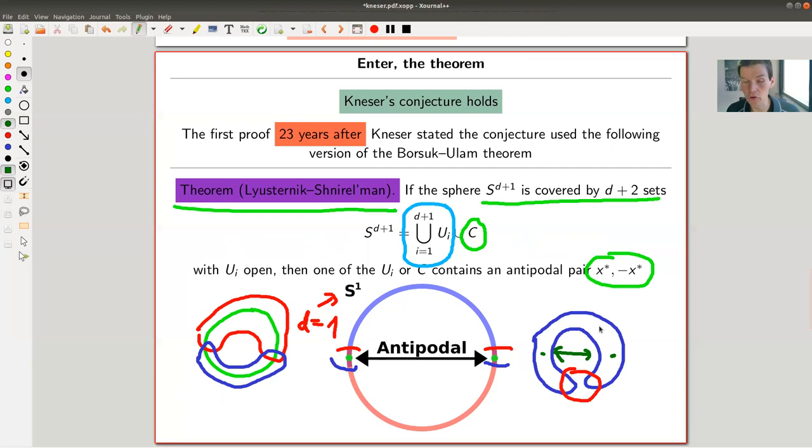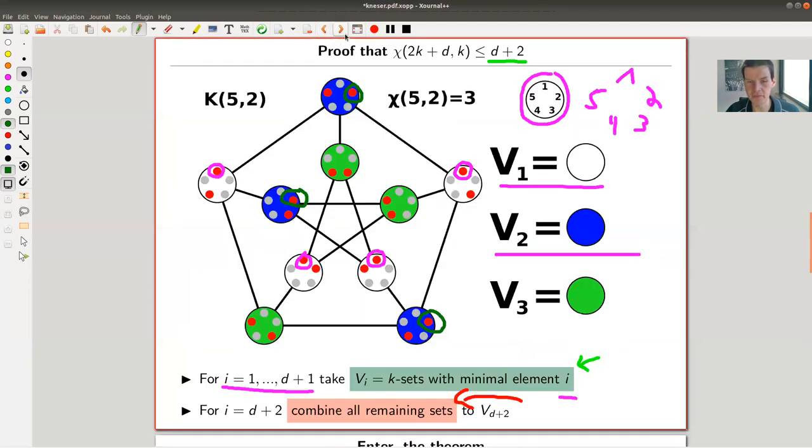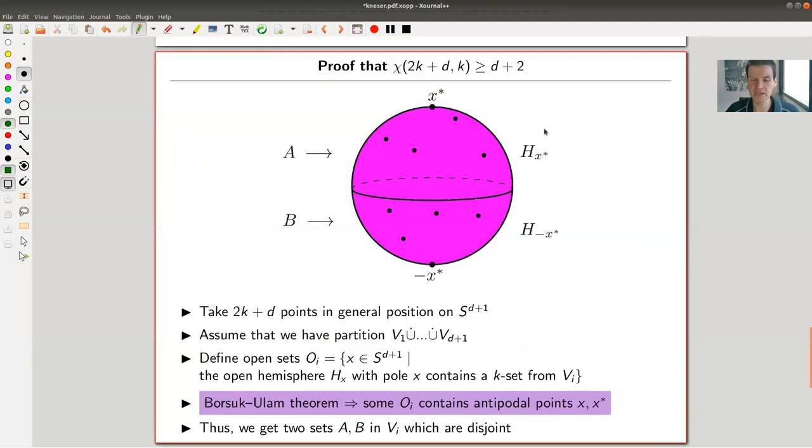Right, so very nice theorem in topology. And, yes, you can use it to prove that it's at least d+2, right. So here we had the opposite. And now we have this direction. And it works as follows.